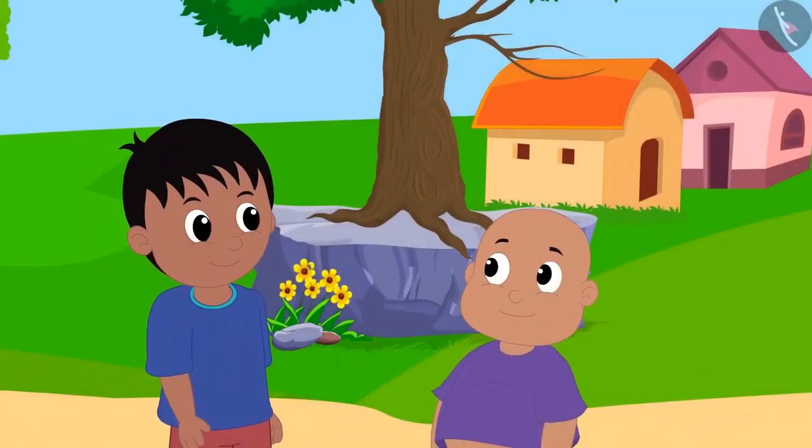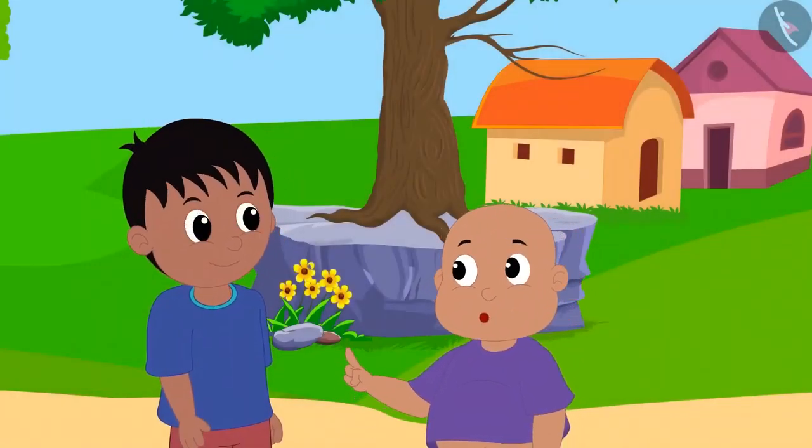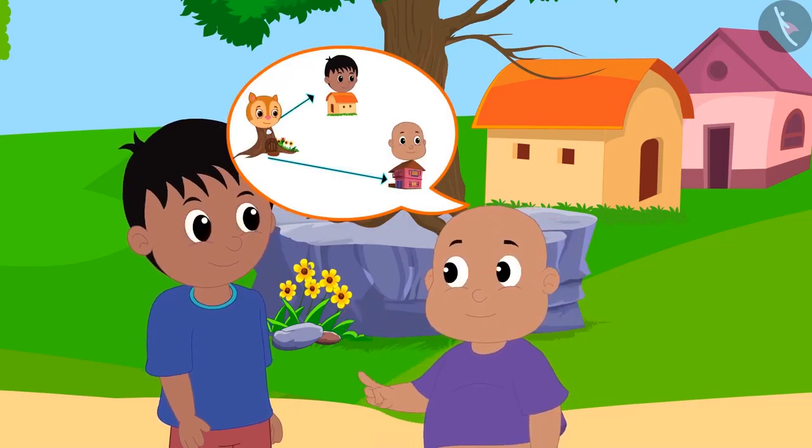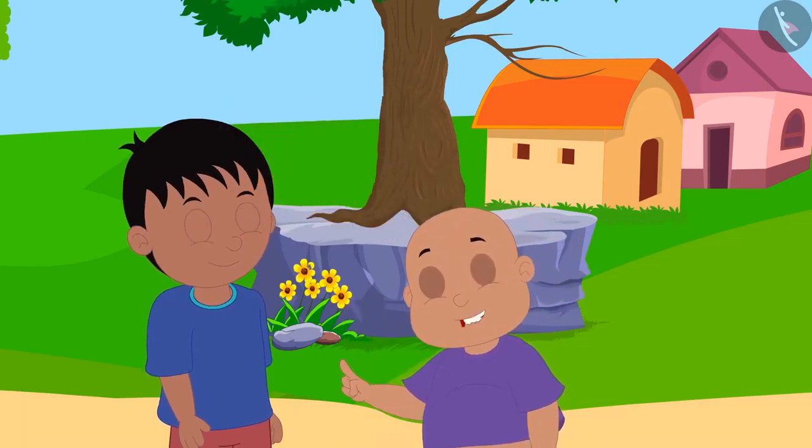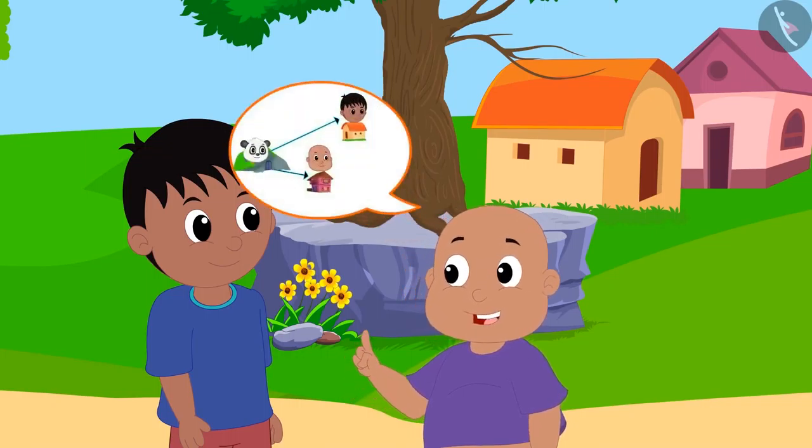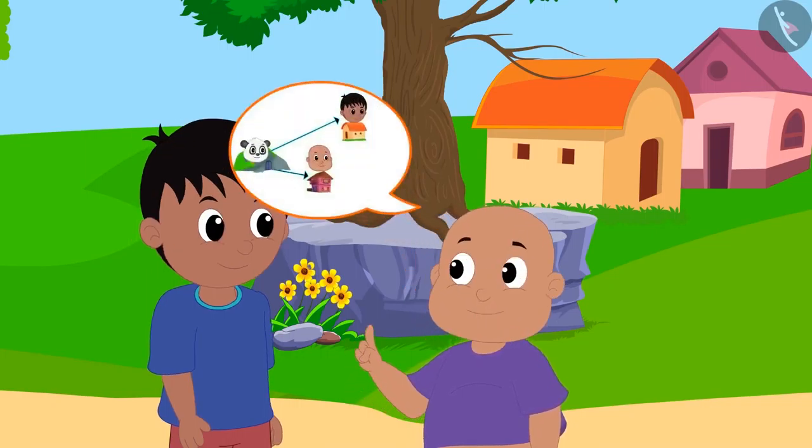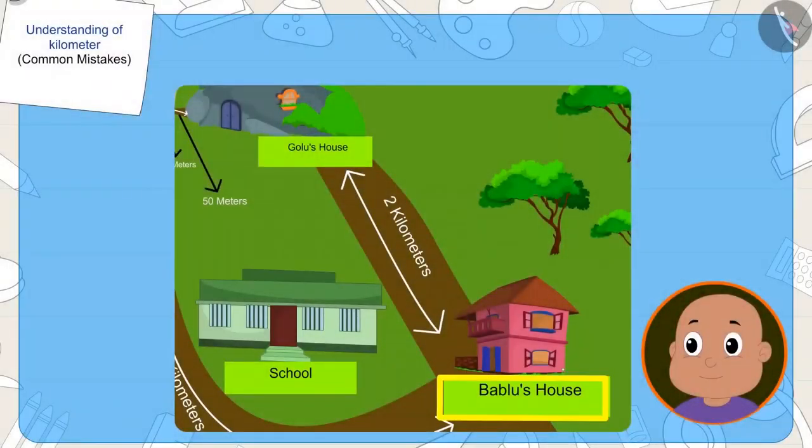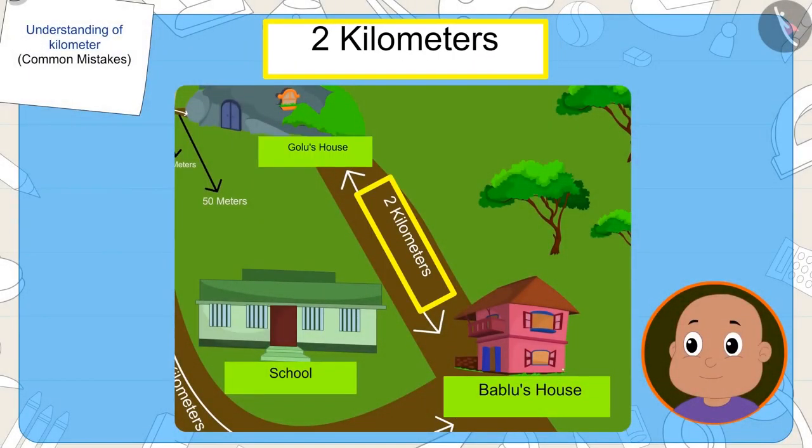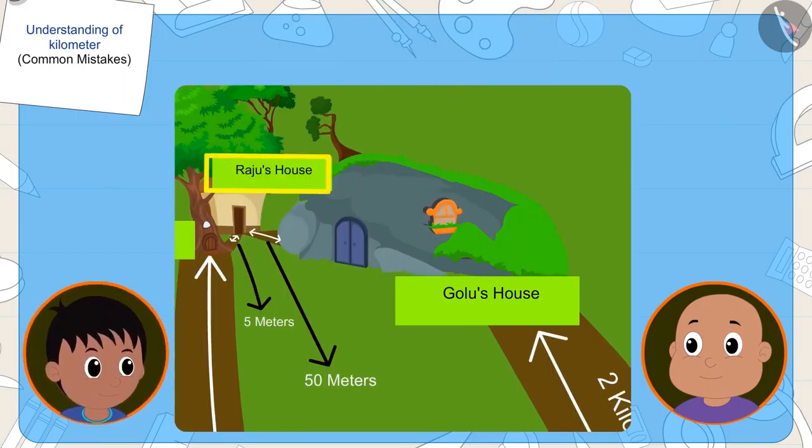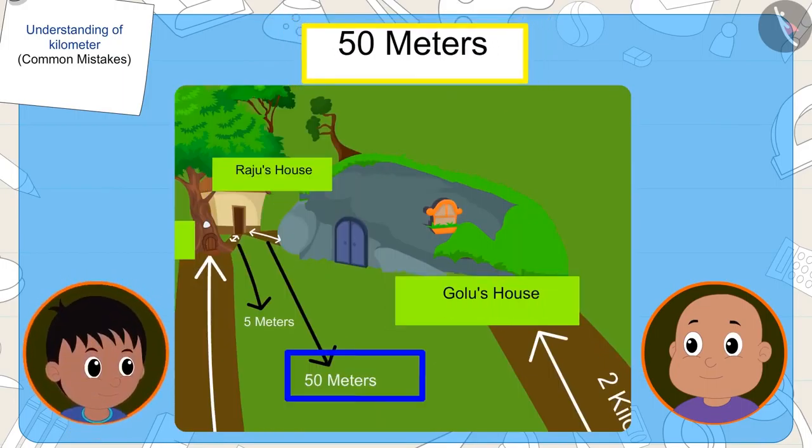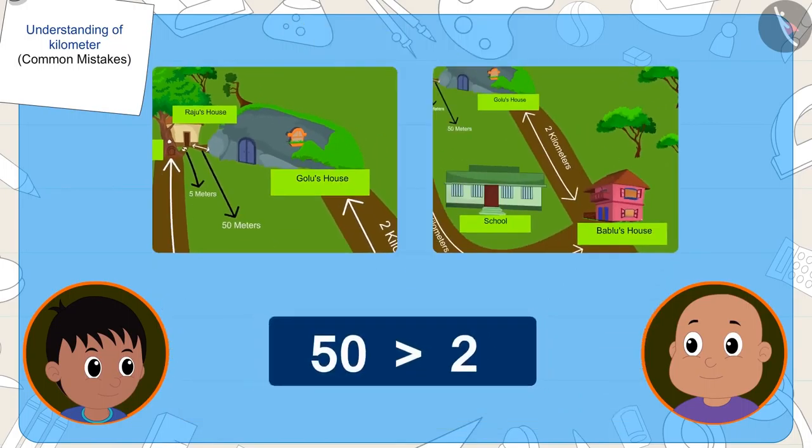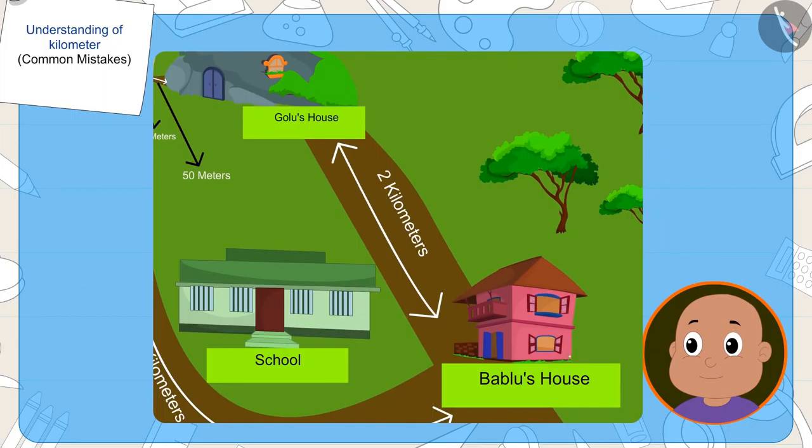Now, Bablu told Raju, even though his house is farther from Chanda's house, but it is definitely closer to Golu's house. His house is two kilometers away from Golu's house. And Raju's house is fifty meters away from Golu's house. And two less than fifty. Therefore, his house is closer to Golu's house.